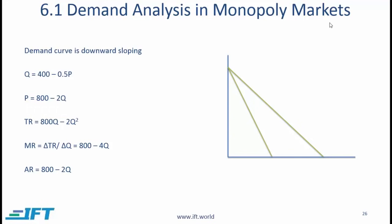Demand analysis in monopoly markets. As you can imagine, the demand curve in a monopoly is downward sloping. Sometimes students ask why the demand curve for a monopoly is downward sloping given that there is no other product. Think of it this way: if you consume electricity and there is just one provider, your consumption would still be dependent on price. If electricity is provided at a very low price, your demand would be relatively high; if electricity is extremely expensive, your demand would be relatively low. So even though there is just one company providing electricity, your demand still depends on price.